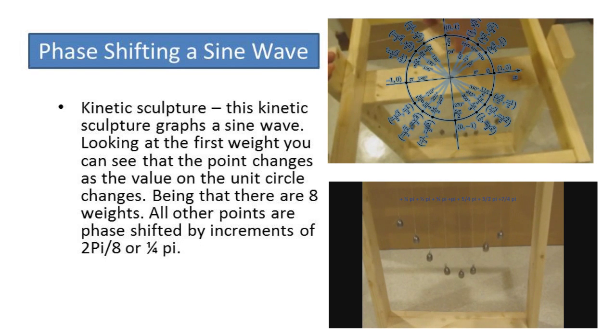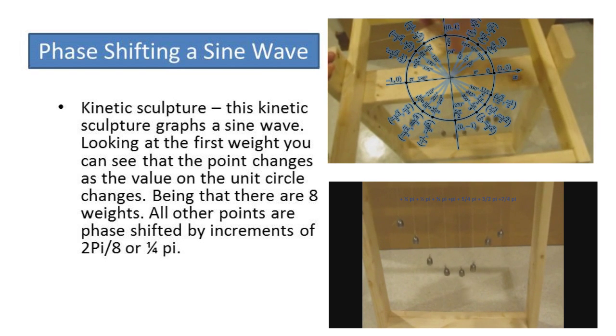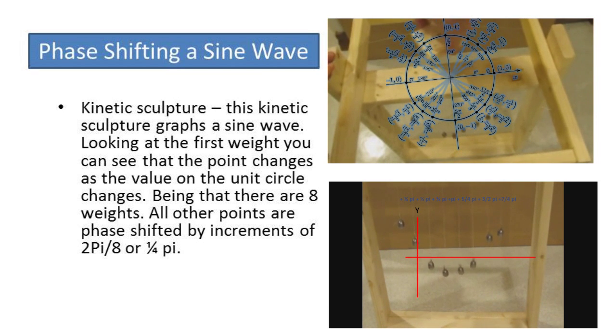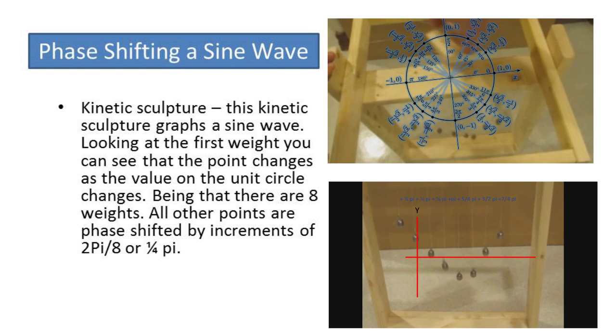I have overlaid a unit circle and if you notice the first weight moves along with the sine value. Now if we define our y-axis at the second weight we would find that relative to the first weight the second weight is pi over 4 ahead of the first weight.